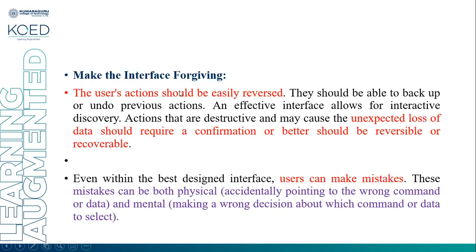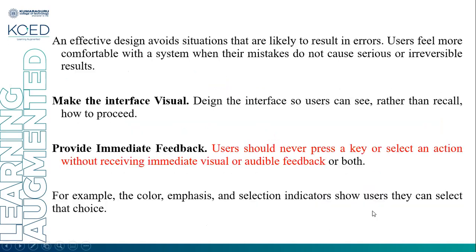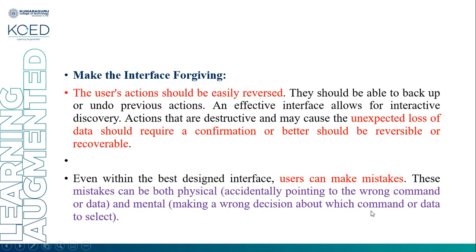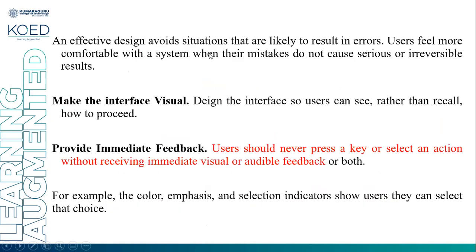Make the interface forgiving: the user's actions should be easily reversed, and they should be able to back up or undo the previous action. An effective interface allows for interactive discovery. Actions that are destructive and may cause unexpected loss of data should require confirmation, or should be reversible and recoverable. Even within the best-designed interface, users can make physical mistakes — accidentally pointing to the wrong command or data — or mental mistakes, making the wrong decision about which command or data to select. An effective design avoids situations likely to result in error, and users feel more comfortable when mistakes do not cause serious or irreversible results.